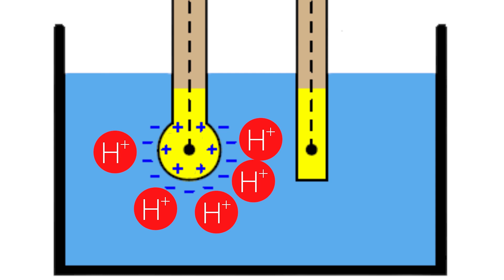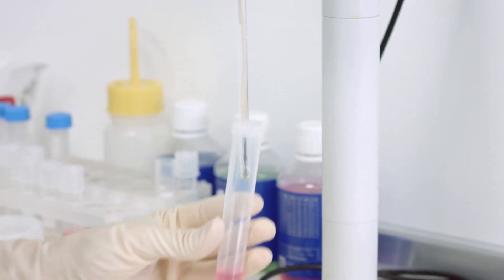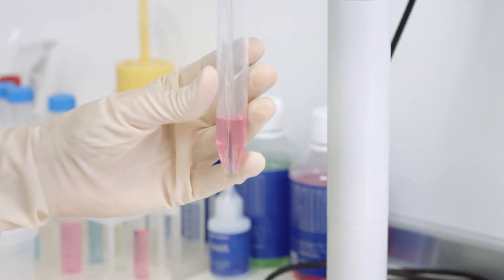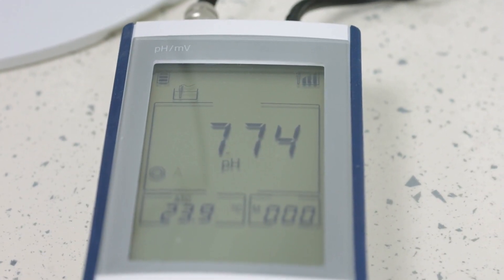This will generate a tiny voltage across the bulb. The voltage will then be sensed by the wire, passed onto the voltmeter, and be converted into an equivalent pH value.